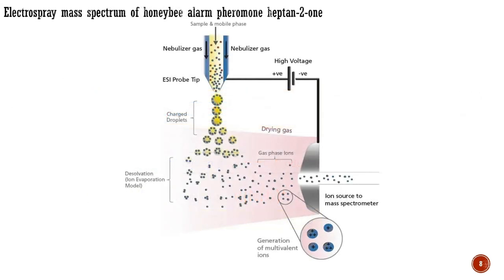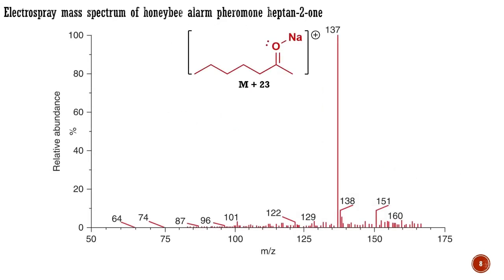With electrospray mass spectrometry, an aerosol of the substrate is ionized with sodium ions or protons. This means that masses of M+1 and M+23 are often observed, where 1 corresponds to the mass of a proton and 23 is the mass of a sodium cation. Here is the electrospray mass spectrum of honeybee alarm pheromone heptanone. Notice how a single molecular ion is clearly visible, but it has a mass of 137, which is 23 more than the mass of 114 — in other words, this is the mass of heptanone plus the mass of sodium ion.